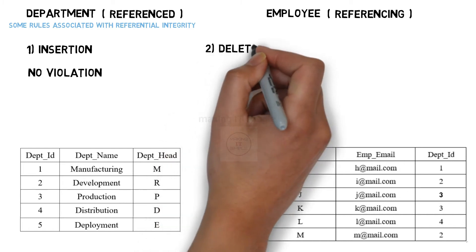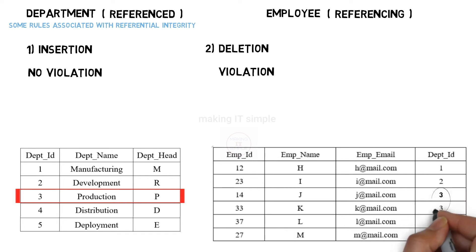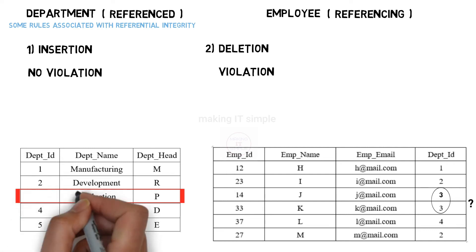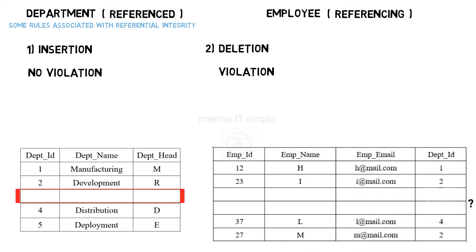The second case we will check is deletion. What if we delete a record from the reference table? Let us say we delete the record of production department from the table. Will this violate referential integrity? Yes, it will. We have deleted the production department record from the department table, but it is still referenced in the employee table. So if there is no department present with department ID 3, for which department are these employees working? There is no reference for department ID 3 — this violates referential integrity.